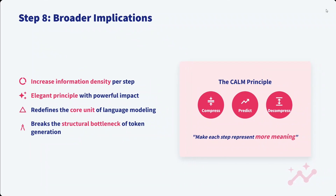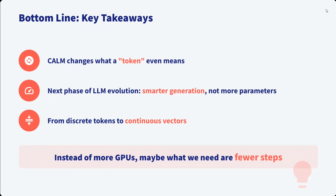The broader implications: increased information density per step, an elegant principle with powerful impact — it redefines the core unit of language modeling and breaks the structural bottleneck of token generation. The takeaway: CALM changes what a token even means; a token is now a vector. The next phase of LM evolution is smarter generation, not just more parameters — from discrete tokens to continuous vectors. Instead of more GPUs, maybe what we need is fewer steps. Go read the paper; it's trending right now.